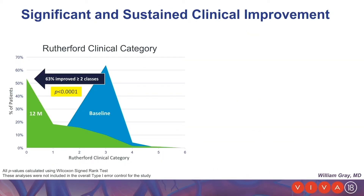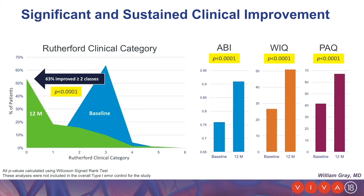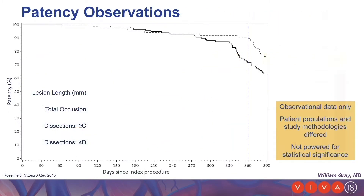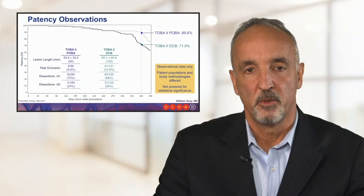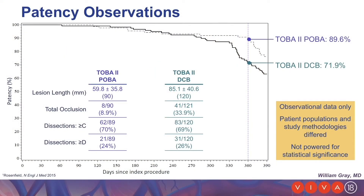Important in the outcomes of these patients is their clinical improvement. There was a marked improvement from baseline Rutherford classification to 12 months, as well as marked improvements in ankle-brachial index and patient satisfaction. Regarding the combined population of POBA and DCB patients, when we look at the two groups, they are not surprisingly different since operators had a choice — these are not randomized arms. The lesion length in the TOBA II POBA group was about 6 centimeters, compared to the DCB arm at 8.5 centimeters, so the DCB arm had longer lesions.